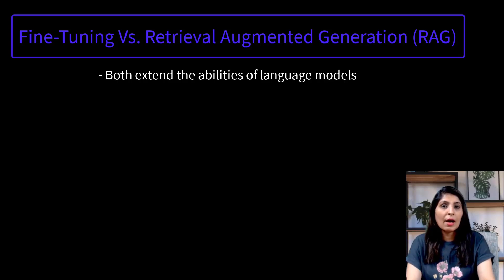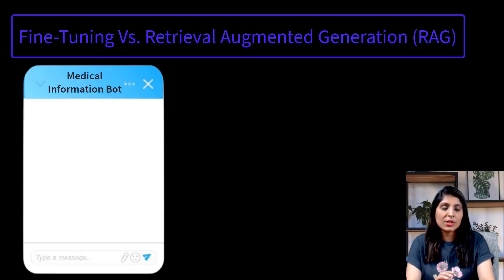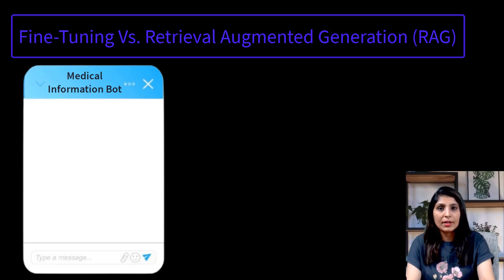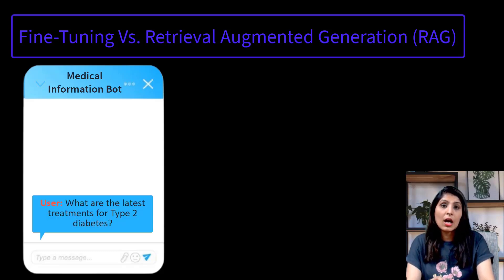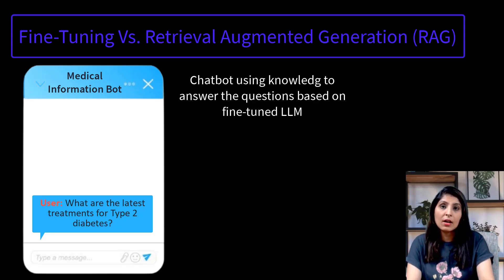Imagine we have a medical information chatbot designed to answer queries based on medical data. A user asks this question: what are the latest treatments for type 2 diabetes? Let's first understand how an LLM that is fine-tuned on medical data will reply to this question.